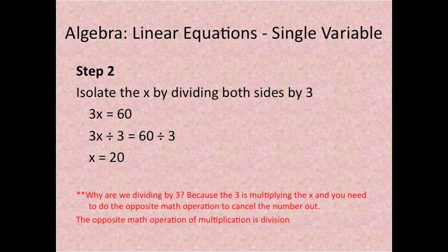Step 2: Isolate the x by dividing both sides by 3. 3x equals 60. 3x divided by 3 equals 60 divided by 3. x equals 20.